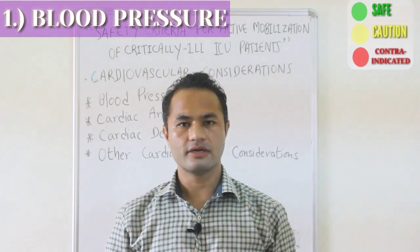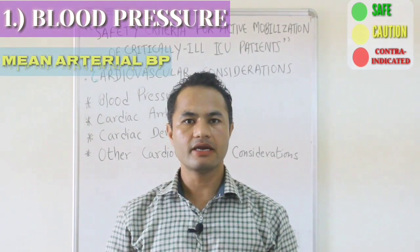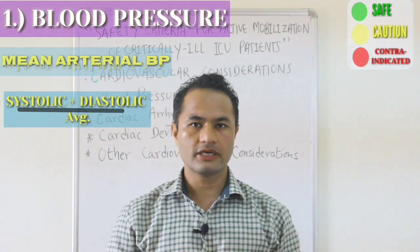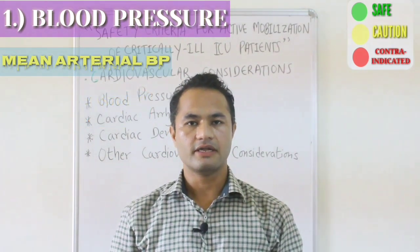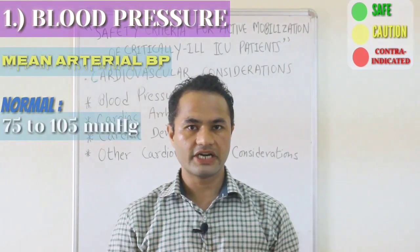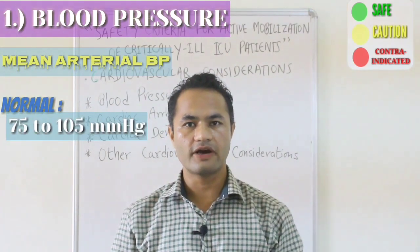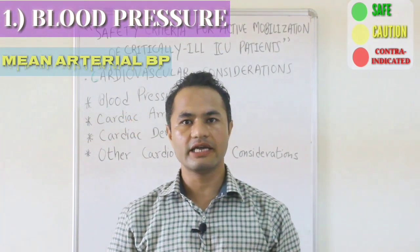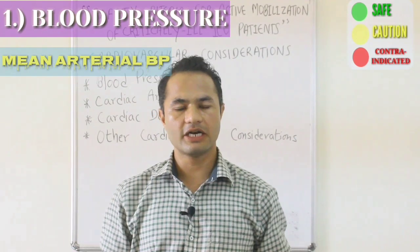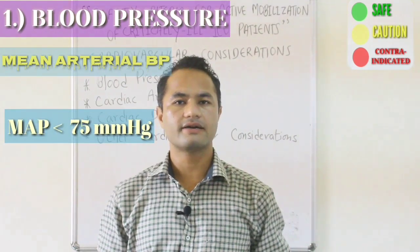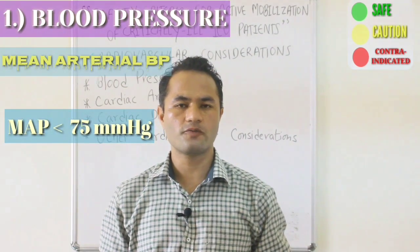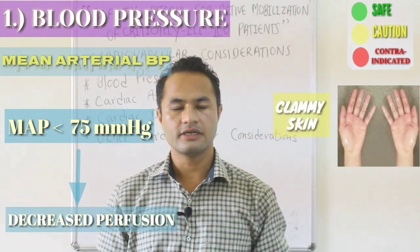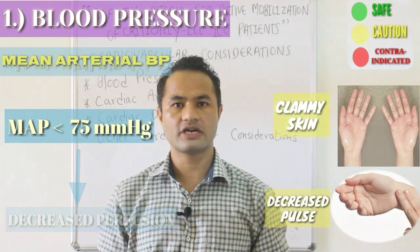The second cardiovascular consideration under blood pressure is mean arterial pressure (MAP), which is generally the average of systolic and diastolic pressure. Its normal target range is 75 to 105 mmHg, but it may vary in critically ill patients. If MAP is below its target range, it may lead to signs of poor perfusion such as cold and clammy skin or decreased/absent peripheral pulses.